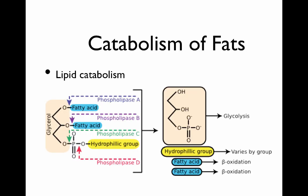The key for the TCA cycle is to have pyruvate as input. One way to get pyruvate is through glycolysis — the breakdown of sugar — but it's not the only nutrient that can generate pyruvate. Another example is the catabolism of fats, so let's look at lipid catabolism. To catabolize lipids, the first thing you do is break apart the lipid into the glycerol backbone, the hydrophilic group, and the two fatty acids, carried out by various phospholipases.